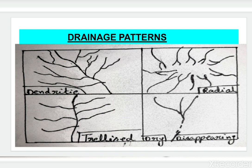The fourth drainage pattern is dry or disappearing — these are mainly dry rivers. Due to lack of water, these rivers generally become dry in winter or summer season.